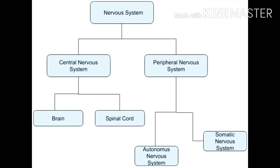Now let us look at the human nervous system. The human nervous system is divided into two main parts: the central nervous system and the peripheral nervous system. The central nervous system consists of two parts: the brain and the spinal cord. The peripheral nervous system is also of two types: the autonomic nervous system and the somatic nervous system.